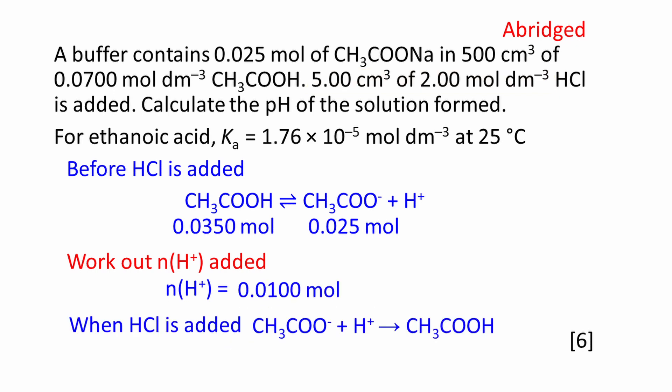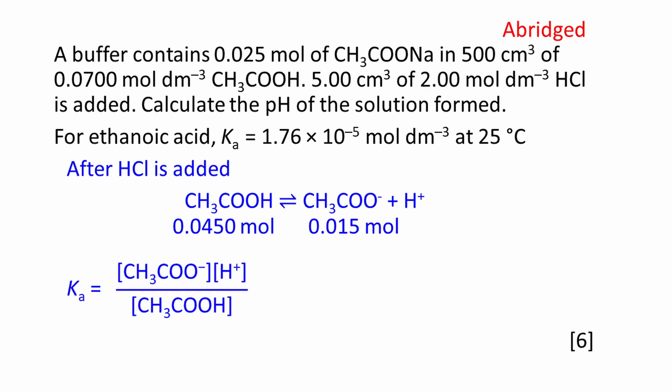H plus ions from the hydrochloric acid react with ethanoate ions to produce ethanoic acid. CH3COO- plus H plus gives CH3COOH. It's a one-to-one reaction. The amount of ethanoate is reduced by 0.0100 moles. The amount of ethanoic acid is increased by 0.0100 moles. We now have the amount of ethanoic acid and ethanoate ions present in the buffer solution following the addition of hydrochloric acid.